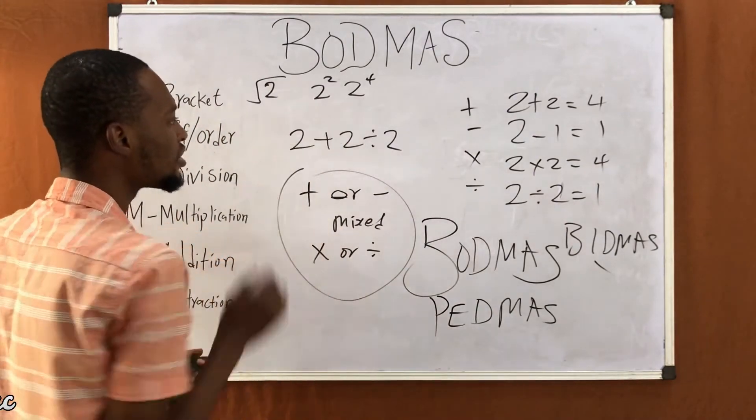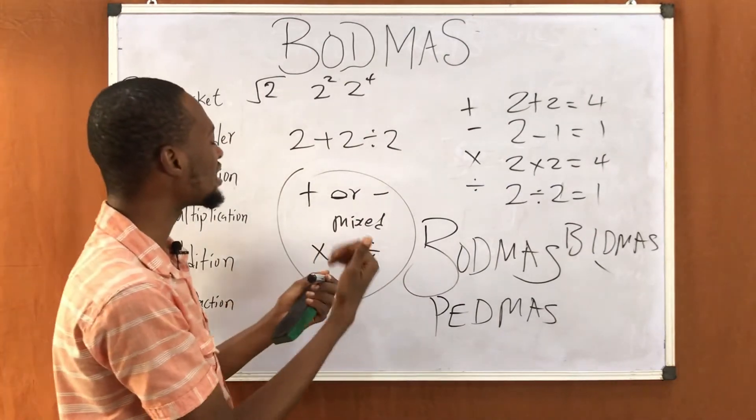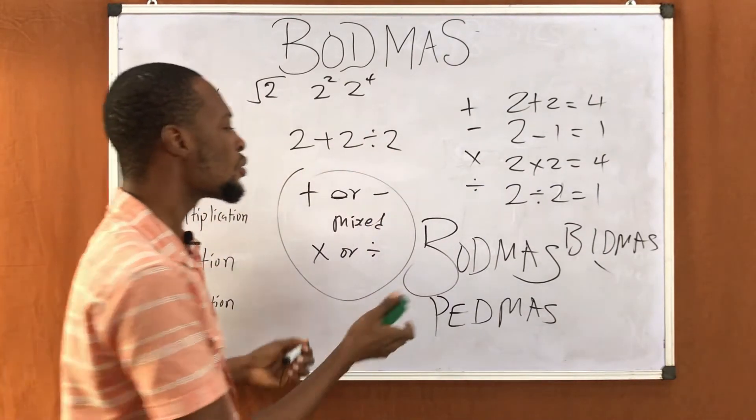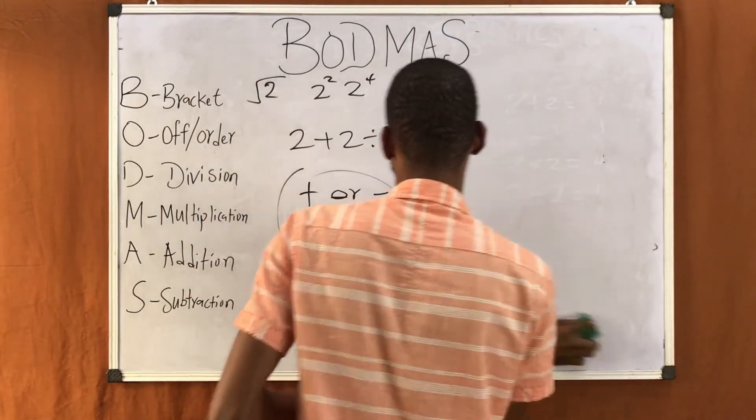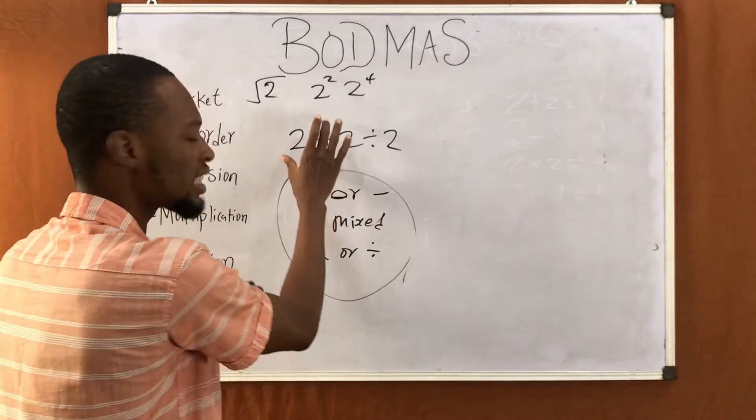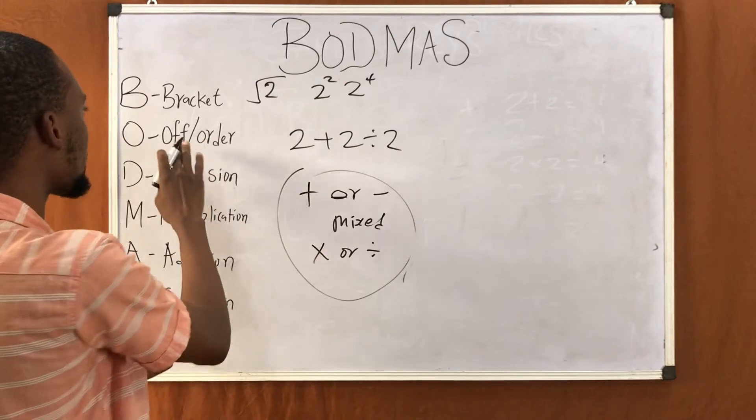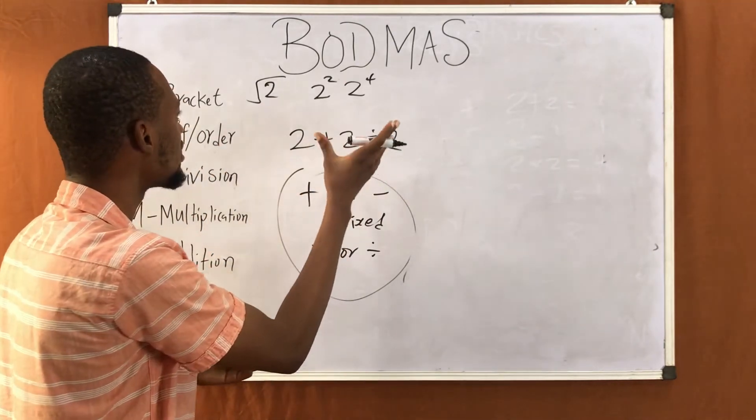Now back to this question: two plus two divided by two. In this question, addition is mixed with division, so you can't just solve like that. You have to apply BODMAS. So now, is there brackets in this question? No, that means you are not using brackets. Is there off or order? No, there's no powers, no root, no exponents.